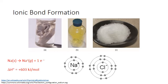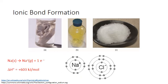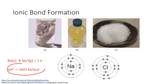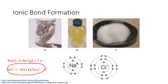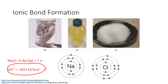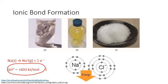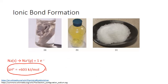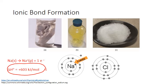It requires energy to be put into the system to pull apart these two oppositely charged particles. That means we're increasing the potential energy of sodium, as indicated by the positive enthalpy value for the ionization process. When that electron is gained by chlorine, however, energy is released. This is because there is an attractive force between the nucleus of the chlorine atom and that gained electron.